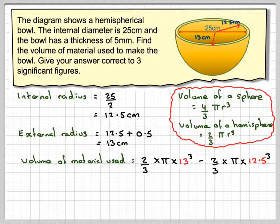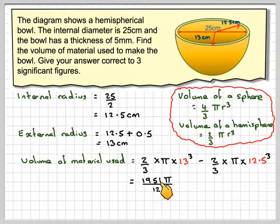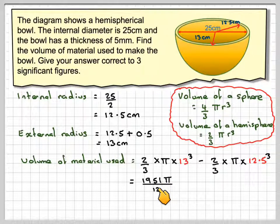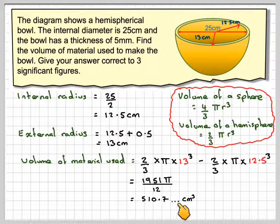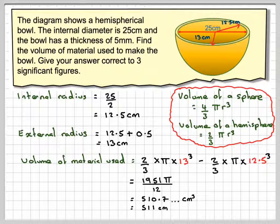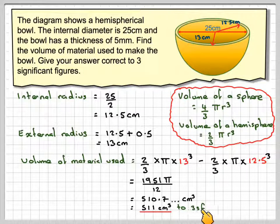Now, when you press your equals button on your calculator, particularly if it's in math mode, you'll get the exact answer, which is 1951 pi divided by 12. If you press the S-D button, it will give you 510 point something centimeters cubed, and therefore you round that off to three significant figures, so that seven makes that zero a one. So the correct answer for this exam question will be 512 centimeters cubed to three significant figures.